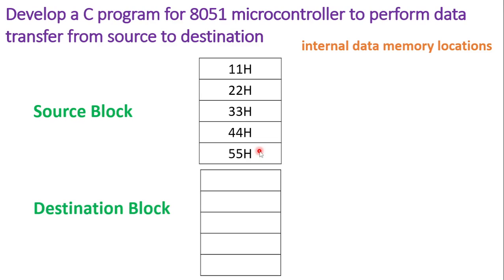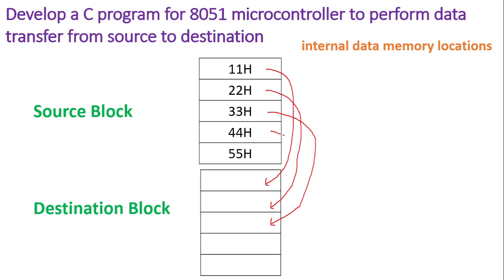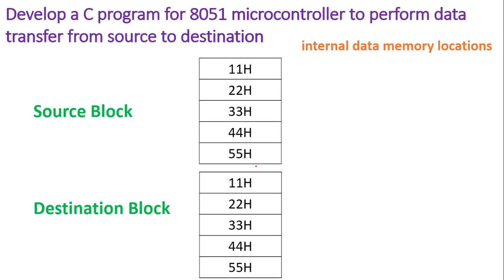These 5 numbers are to be transferred from 5 continuous source block locations to destination block locations. The first number, 11H, is to be copied to the first location of the destination block. Similarly, the second number from the source block is to be copied to the second location in the destination block, the third to the third, the fourth to the fourth, and the fifth to the fifth location. At the end of the program, the destination block should look identical to the source block, with all 5 numbers copied.